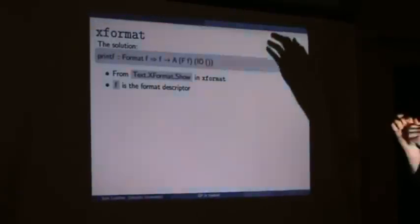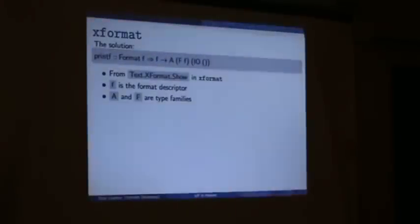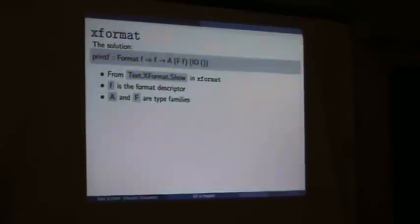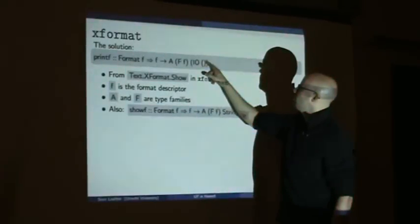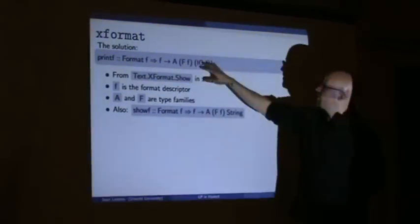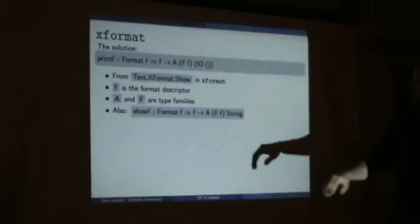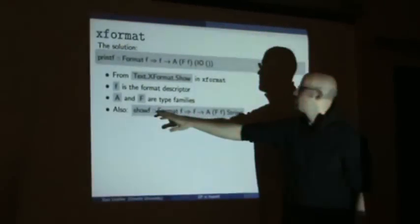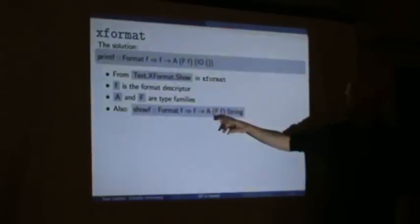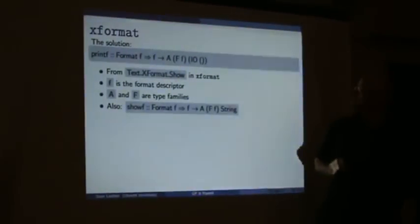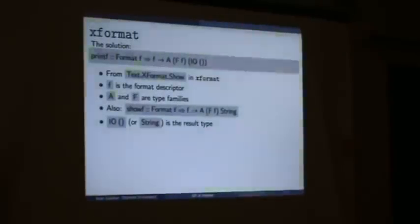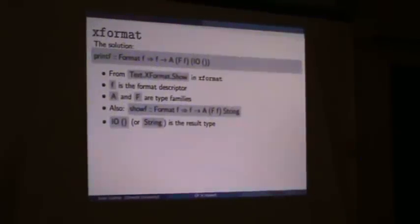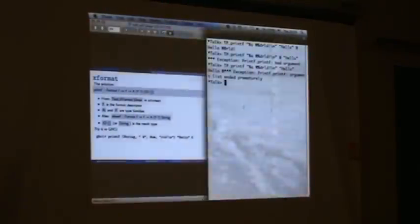So what do we have? We have f as the format descriptor — it's no longer a string here. We have some type families with different kinds, A and F, appearing in weird places. This is a printf. I should mention this is the IO monad with unit — it's in a kind of a weird place, and we'll see that later. Here we have another variation, showf — this is more like the show we had, with a formatter, and the result is a string.